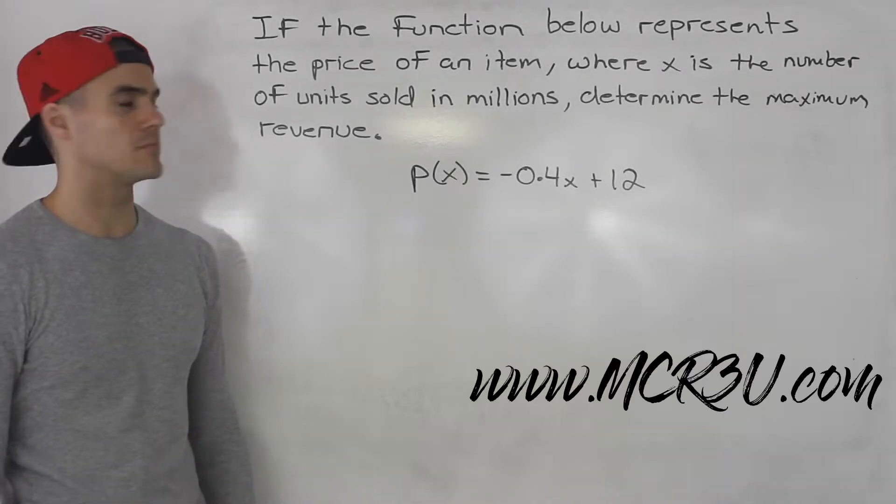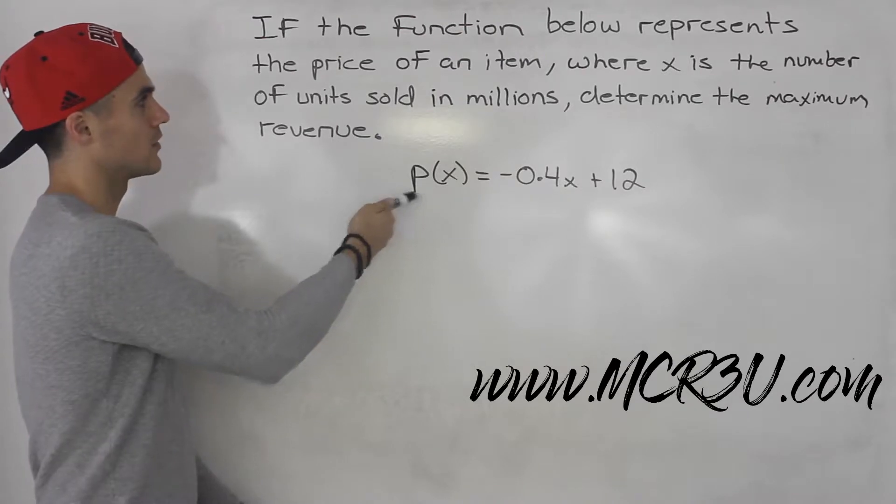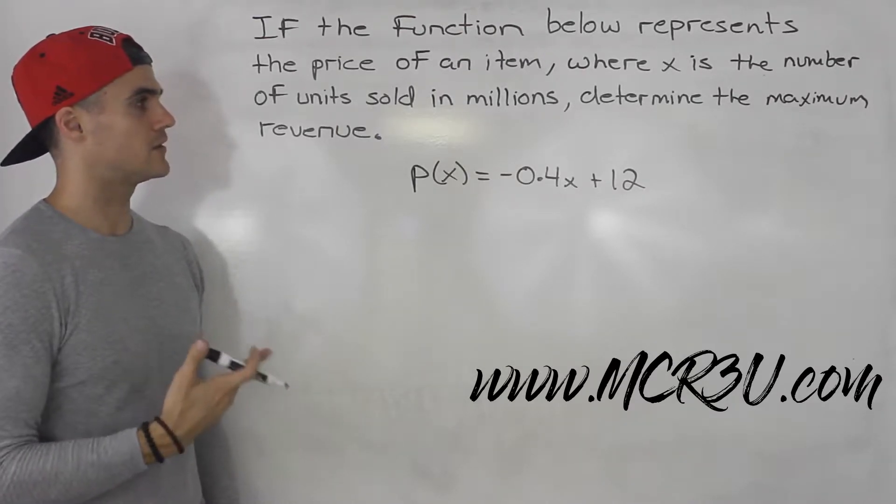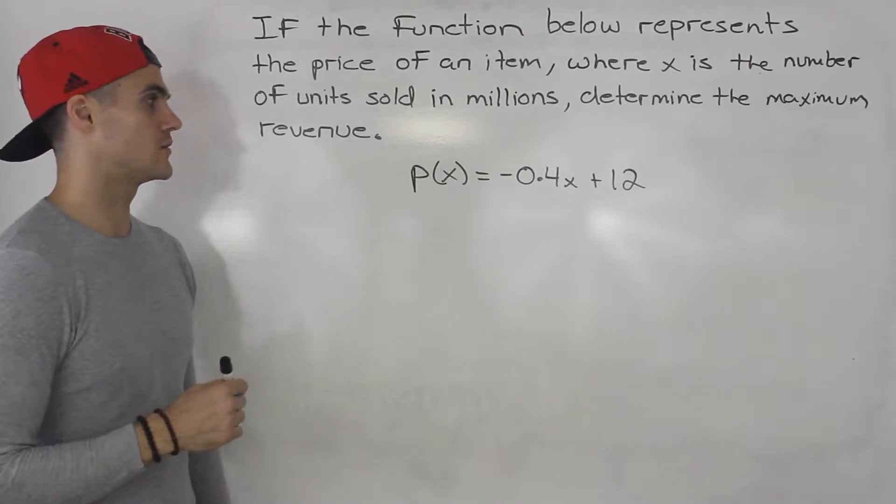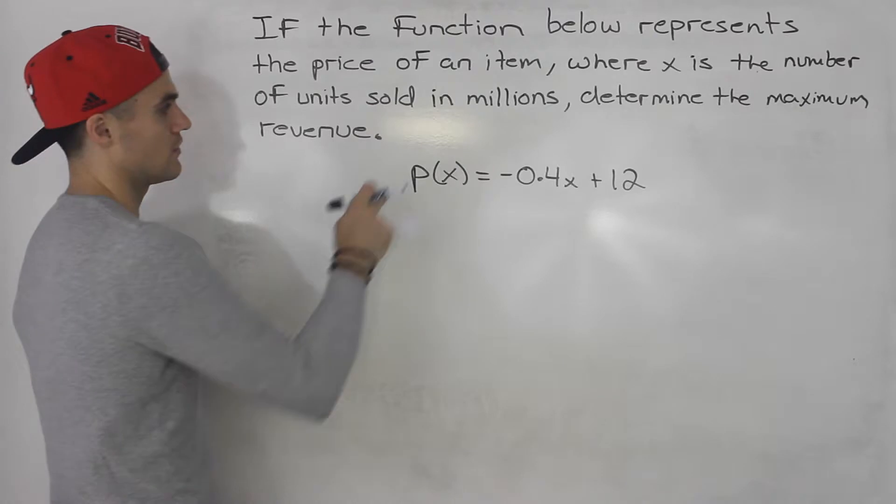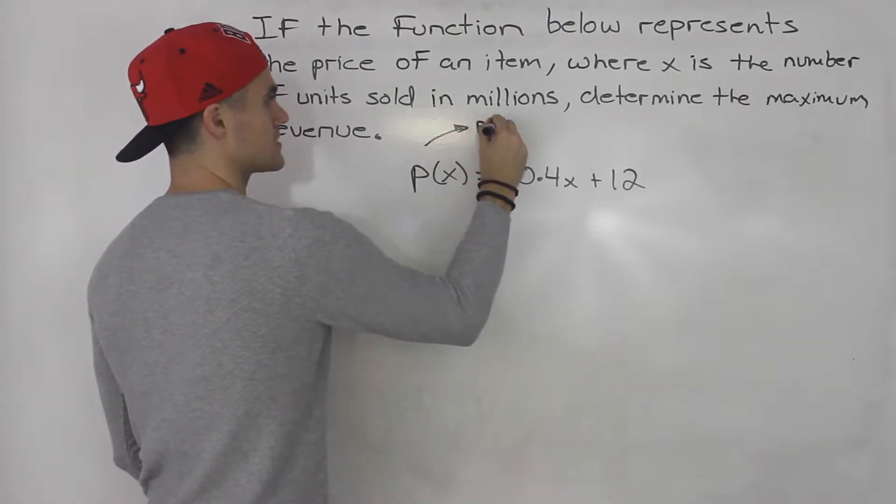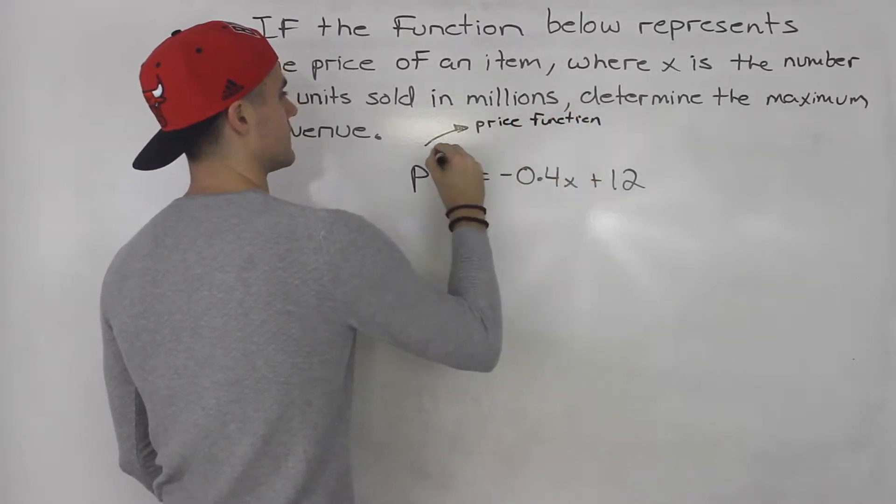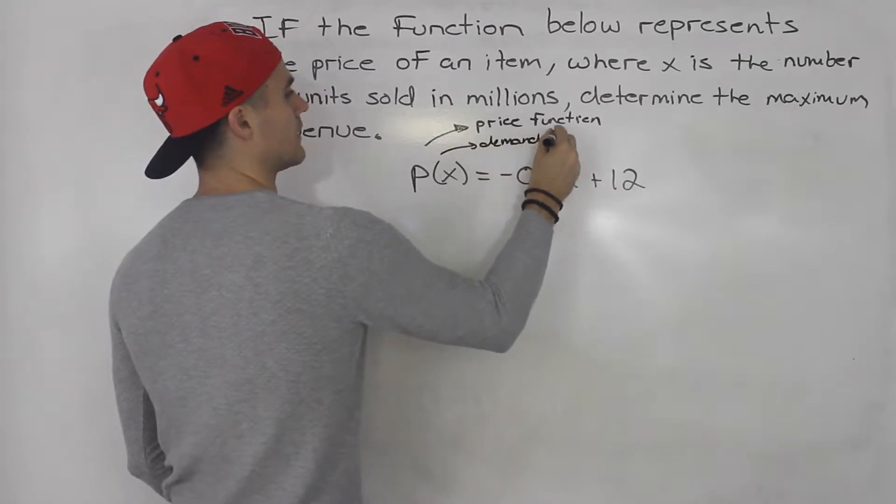Moving on with the section for the max and min of a quadratic, we're told that this function here represents the price of an item, where x is the number of units sold in millions. Determine the maximum revenue. So this here, I want to make a note that this is the price function. Another name for this is the demand function. You may want to write that down.